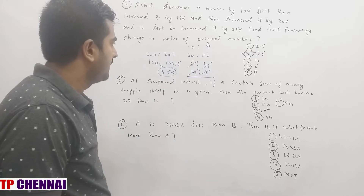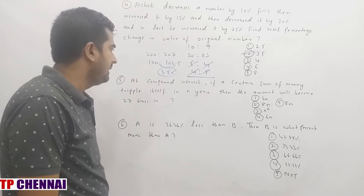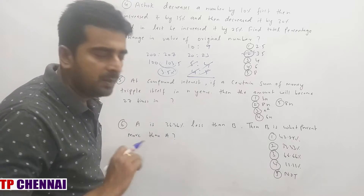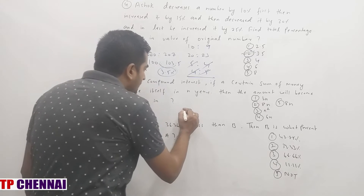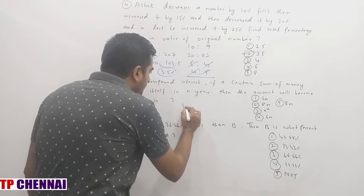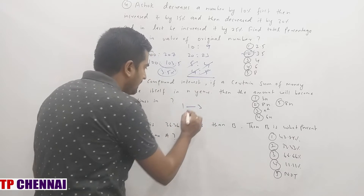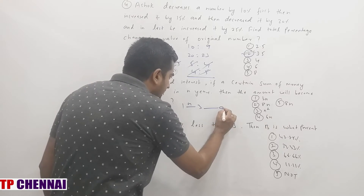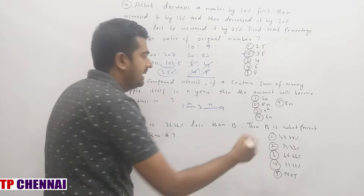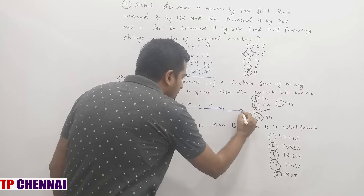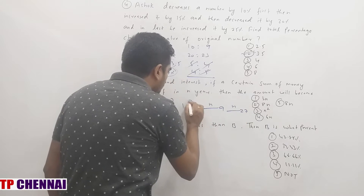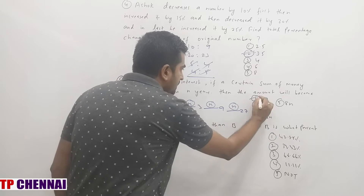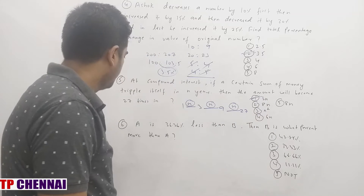Fifth question: At compound interest, if a certain sum of money triples itself in N years, in how many years will the amount become 27 times? Starting with principal 1: it becomes 3 in N years, then 9 in another N years, then 27 in another N years. Total number of years is N + N + N = 3N years.